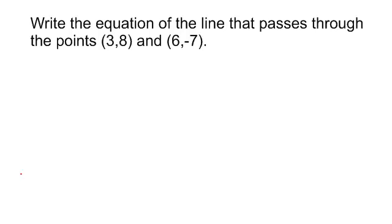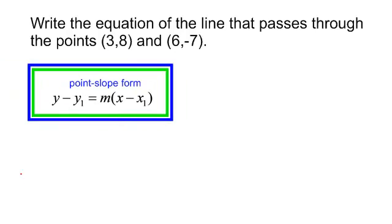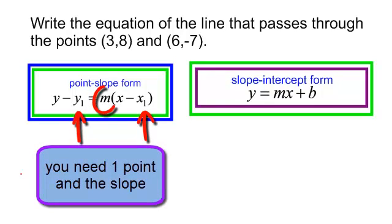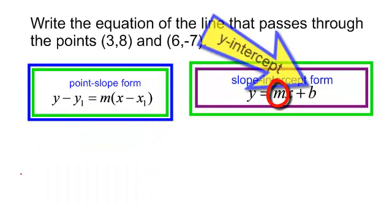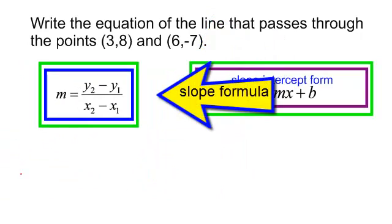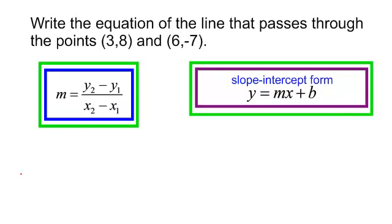You have two choices: you can use the point-slope form or the slope-intercept form of the equation. For point-slope form, you need one point and the slope. For slope-intercept form, you need the slope and the y-intercept. No matter which way you use, you have to have the slope, which uses this formula — y minus y over x minus x. It does not matter which point you start with, just be consistent: if you start with the y from the second point, you must also start with the x from the second point.